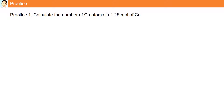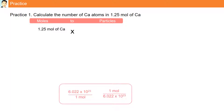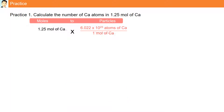Practice. Calculate the number of calcium atoms in 1.25 moles of calcium. Here we convert moles to particles, so we select the first conversion factor: 6.022×10²³ atoms of calcium over 1 mole of calcium. The moles of calcium cancel, and multiplying gives us 7.53×10²³ atoms of calcium present in 1.25 moles of calcium.